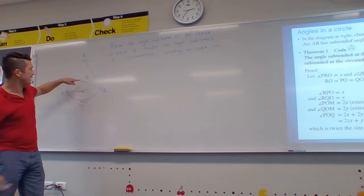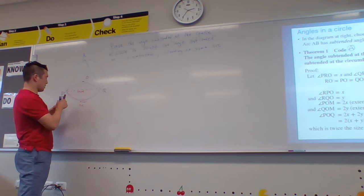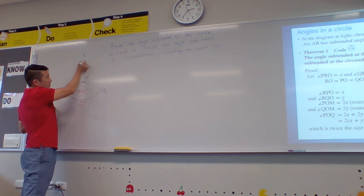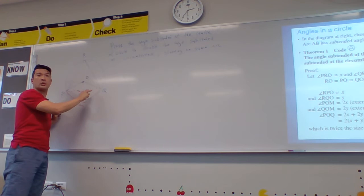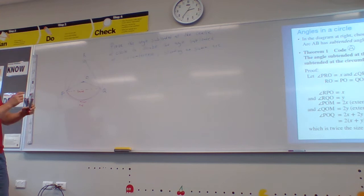So this is a proof that the angle subtended at the centre, that's this one here in the middle, is double the angle at the circumference, that's this one here, if they're on the same arc, or it could be if they're on the same chord. They're basically the same thing.